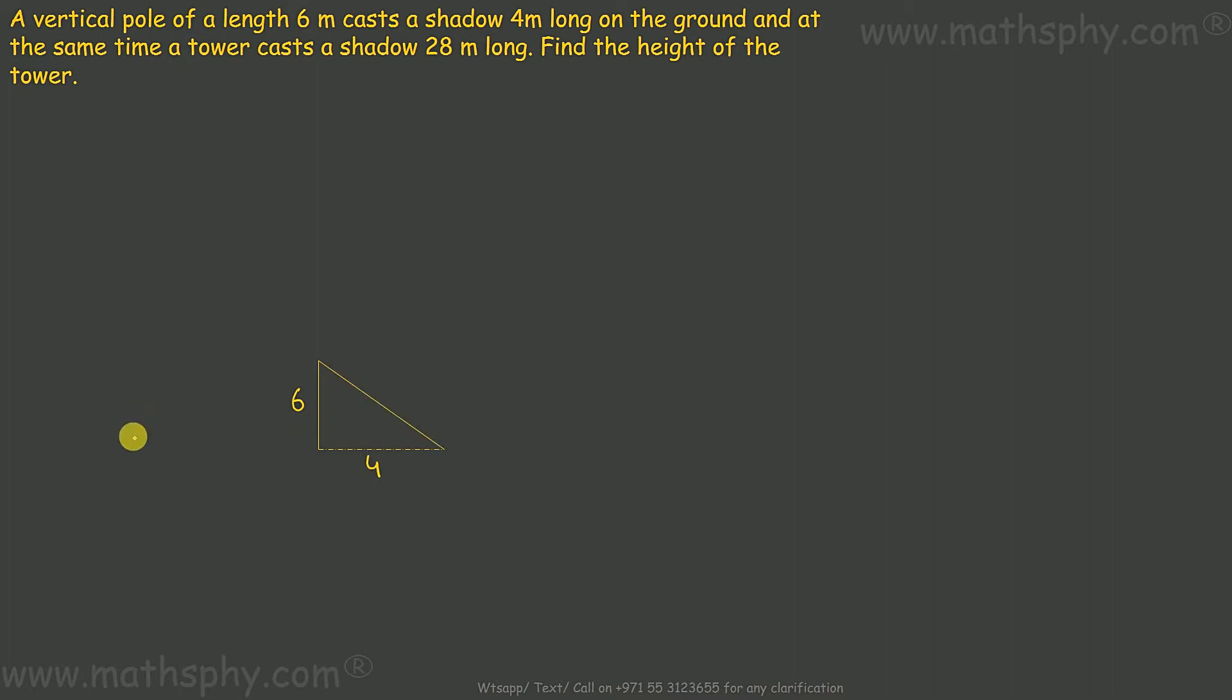I have one more pole here which gives a shadow of 28 meters. So from this end to this end, this is 28 and this is 4. I need to find this out, which is x.